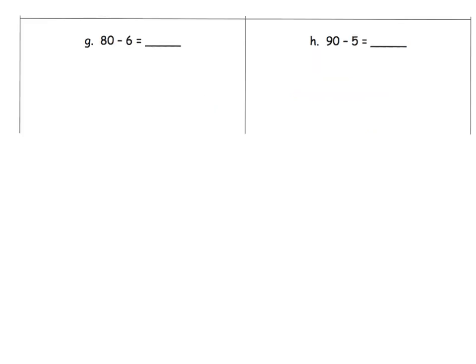So here we've got a couple of problems just to practice. So 80, I'm going to decompose it so that I have a 10, which means it's going to be 70 plus 10. And now we could do 10 minus 6 because subtracting within 10, we really want to be second nature for our second graders. So 10 minus 6 is 4. So now we have 70 plus 4 gives us 74.